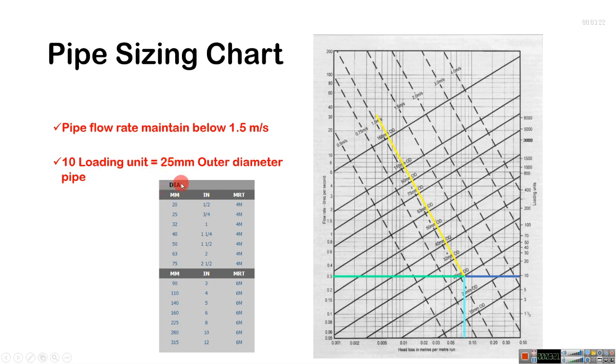This is the PVC pipe's outer diameter chart. It starts 20, 25, 32, 40, 50, 63, 75. In this market, we have available this size.